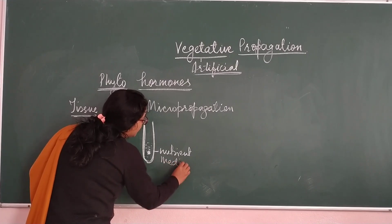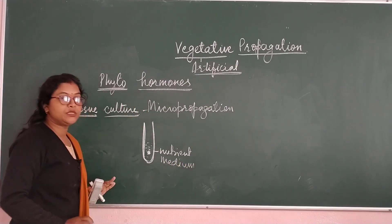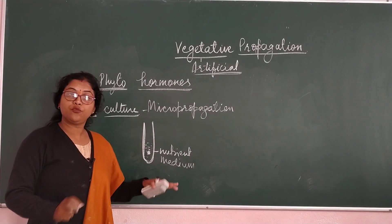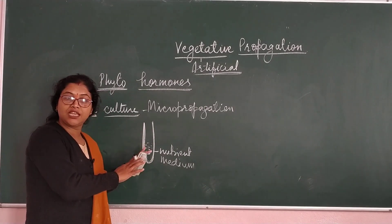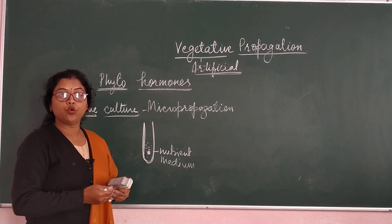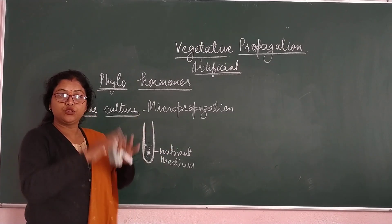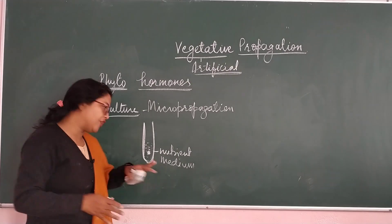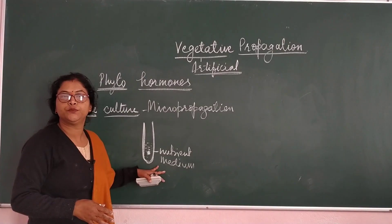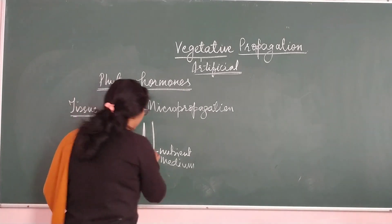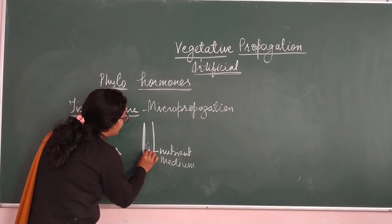This is done in a glass container in a controlled condition. Controlled condition means the same conditions as the natural environment where the plant grows naturally — providing the required sunlight and moisture.